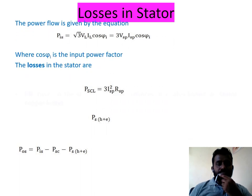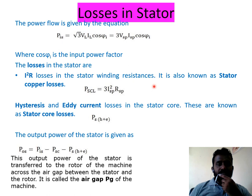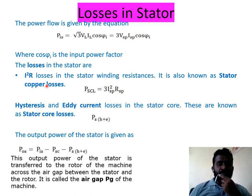Losses in stator: the input power is given by P = √3 × VL × IL × cosφ, which equals 3 × Vphase × Iphase × cosφ, where cosφ is the input power factor. Losses in the stator are I²R losses in the stator windings, also known as stator copper loss (SCL). In a 3-phase system, stator copper loss = 3 × I²R.